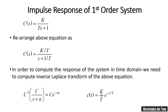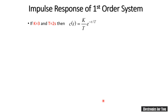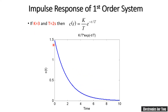Here K is our DC gain and T is the time constant. By substituting values of K and T we can plot the response, with time t on the x-axis and C(t) on the y-axis. The impulse response is an exponential decay function.